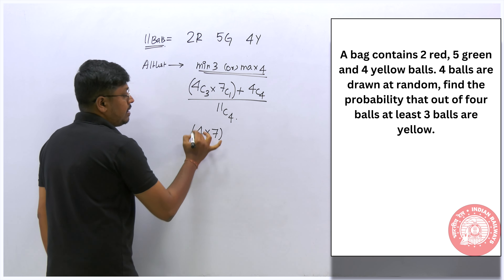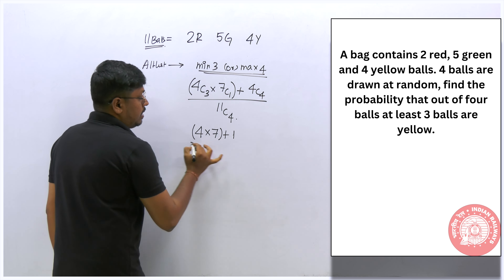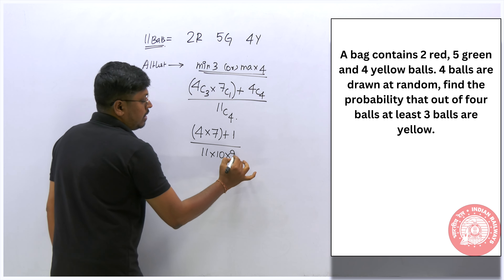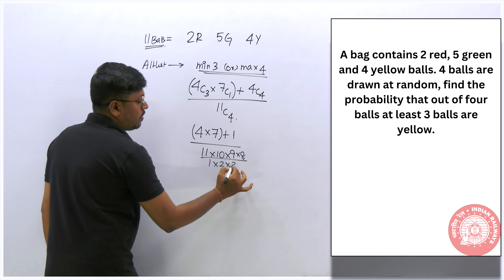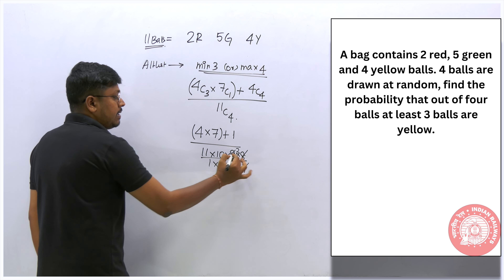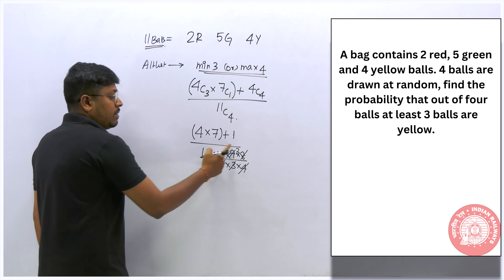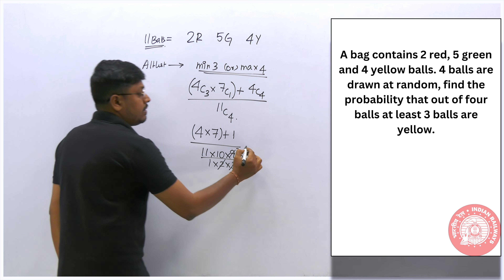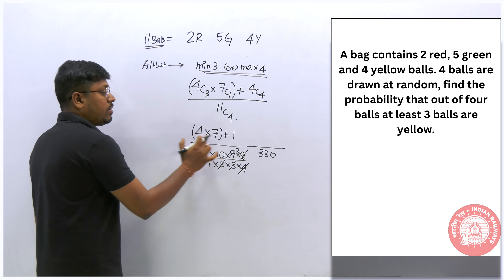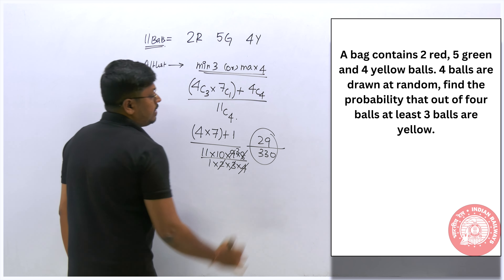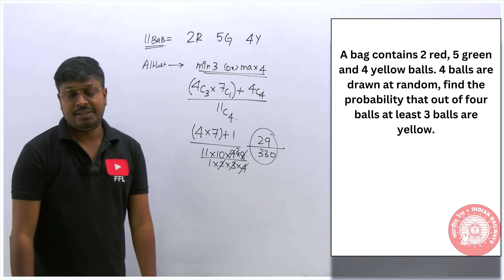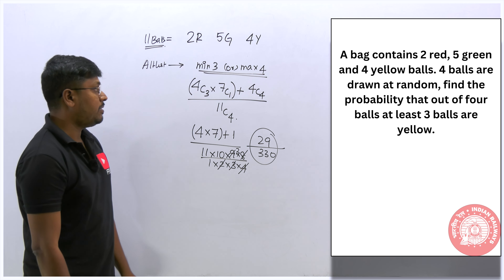Calculating: 4C3 = 4, 7C1 = 7, so 4 × 7 = 28. 4C4 = 1. Numerator = 28 + 1 = 29. For the denominator: 11C4 = (11 × 10 × 9 × 8)/(1 × 2 × 3 × 4). Cancelling: 8 ÷ 4 = 2, 2 ÷ 2 = 1, 9 ÷ 3 = 3, so 11 × 10 × 3 / 10 = 330. Denominator = 330. Final answer: 29/330.